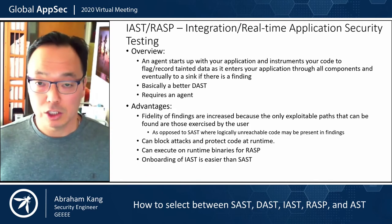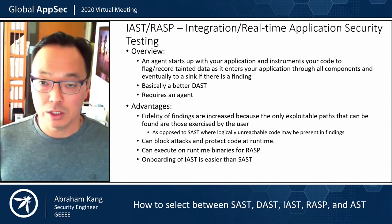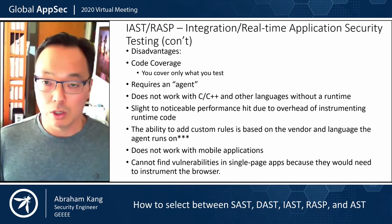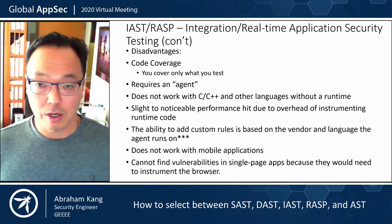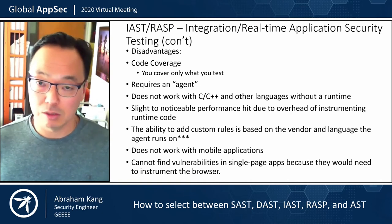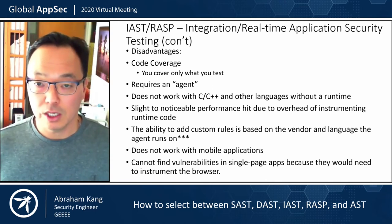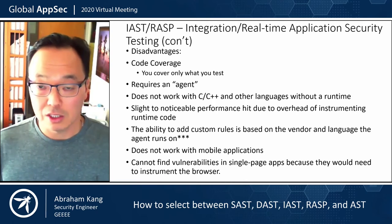The other thing that's nice about RASP is that you can use it to block attacks at runtime. And typically, when you're trying to onboard IAST or RASP in your application, it is easier. In terms of the disadvantages, code coverage is going to be based on what you test — so if you don't test it, you're not going to find it. It does require an agent which is going to limit where you deploy to. It doesn't work with languages that don't have a runtime like C and C++. And there is a slight to noticeable performance hit through the overhead of instrumenting the runtime code.